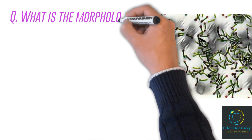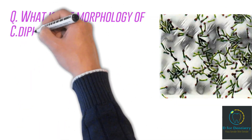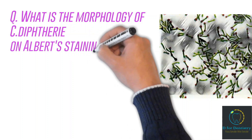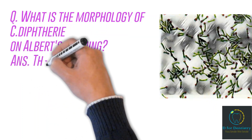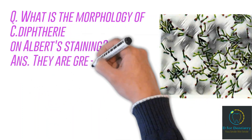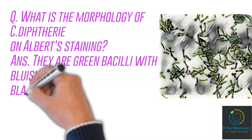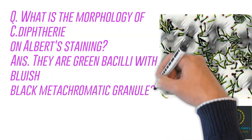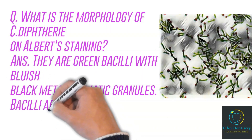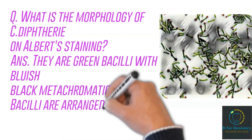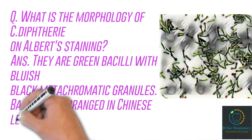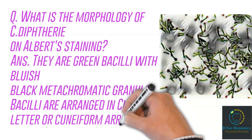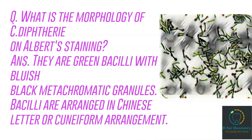What is the morphology of C. diphtheriae (i.e., Corynebacterium diphtheriae) on Albert's staining? Answer: They are green bacilli with bluish-black metachromatic granules. Bacilli are arranged in a Chinese letter or cuneiform arrangement.